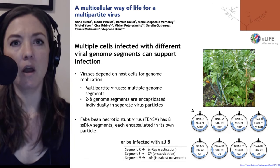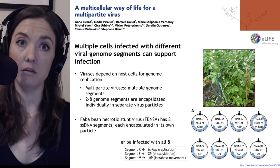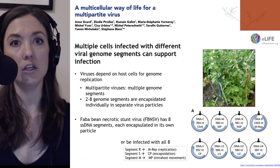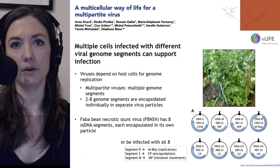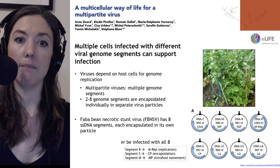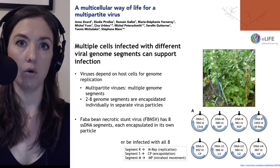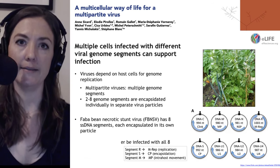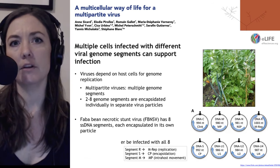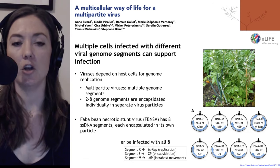Let's dissect that a little bit. We all know that viruses depend on host cells for genome replication — to copy their RNA or DNA genome — and often to generate proteins important for viral capsid or other parts of the viral life cycle. Multi-partite viruses contain multiple genome segments, meaning instead of one piece of DNA or RNA, they have multiple pieces. A famous example is influenza virus, which has eight different RNA genome segments.